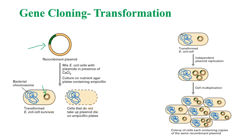Later, independent plasmid replication takes place in the transformed bacterial cell — this is the replication of the plasmid inside the bacterial cell. Then cell multiplication takes place, which is the replication of bacterial cells. Since these cells contain copies of the same recombinant plasmid, they are called clones.